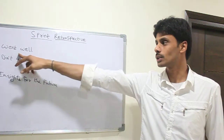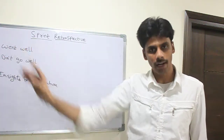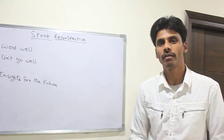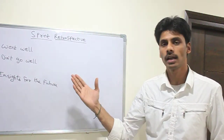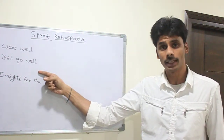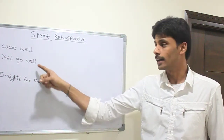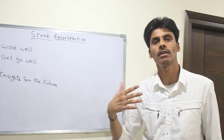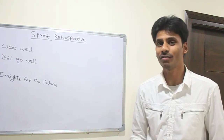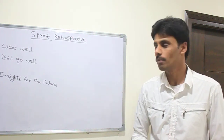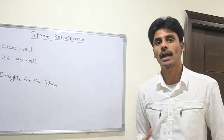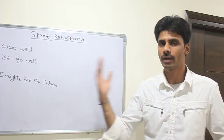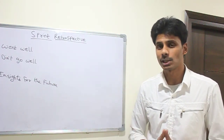The scrum master is going to start with what went well and give a chance to each team member to share what went well. Then he will move on to what didn't go well that sprint, and from both of those you can derive a lot of insights for future sprints. That's the power of agile methodologies and scrum — you can learn from short iterations and keep improving as you progress, instead of waiting a year or six months.